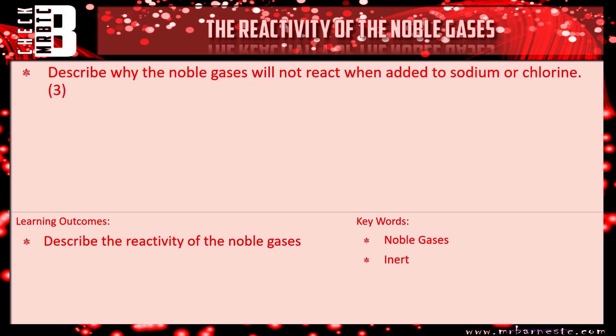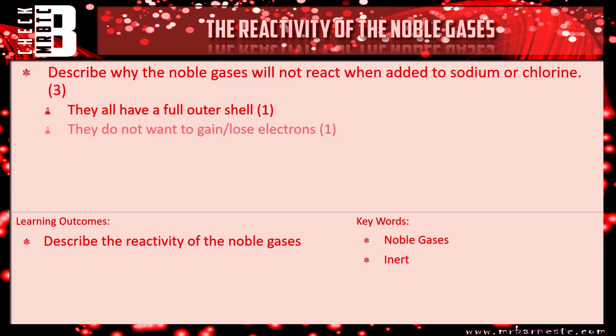Okay, let's see how you've done. The first thing to talk about is the outer shell — they're all full. It's really important to get that in. For any noble gas question: full outer shell. They've got a full outer shell, so they do not want to gain or lose electrons. And if they don't want to gain or lose electrons, they are unreactive — they're inert — they will not react. Any of those would have got you the third marking point.